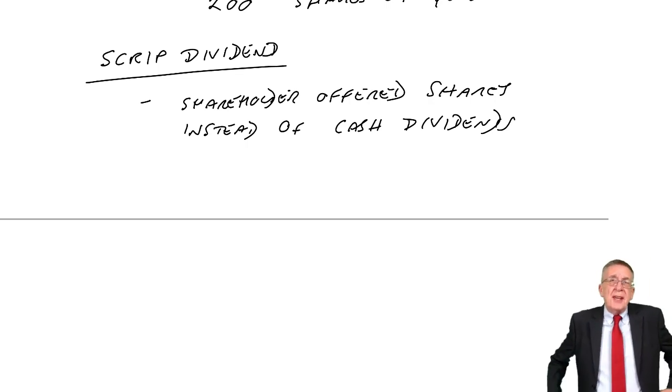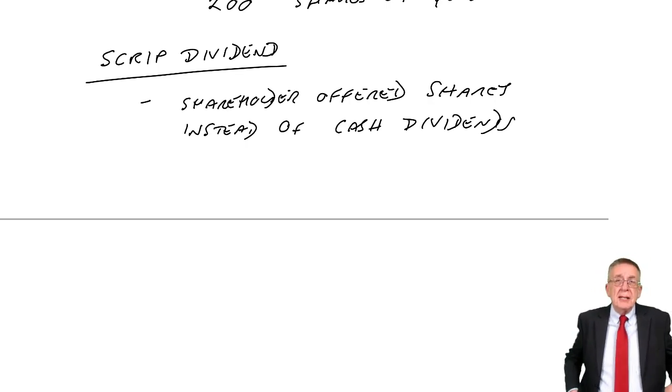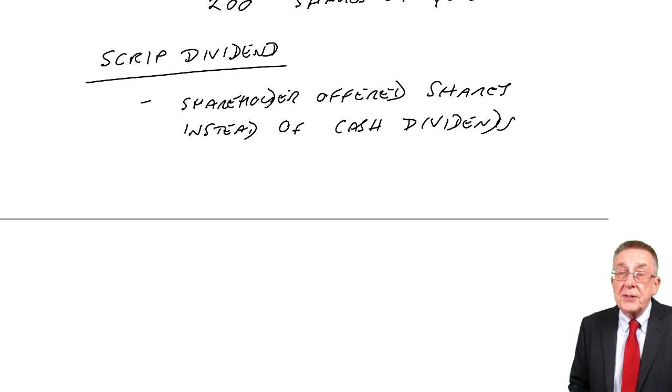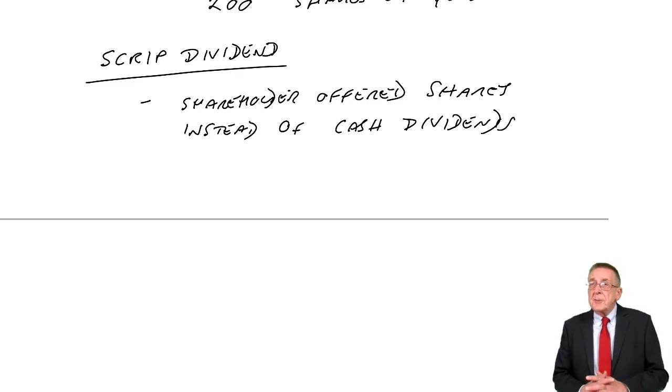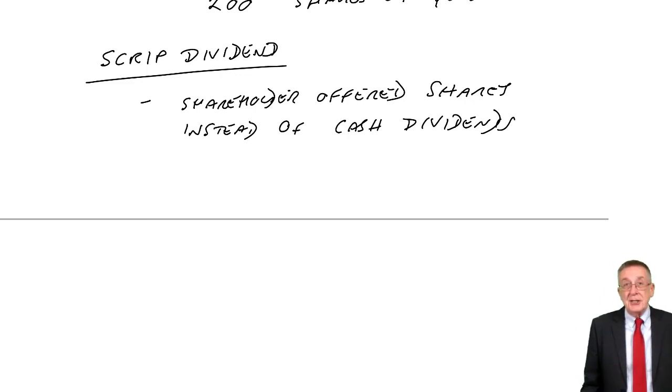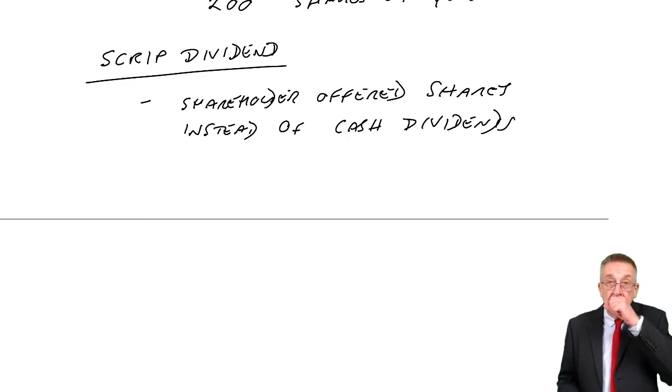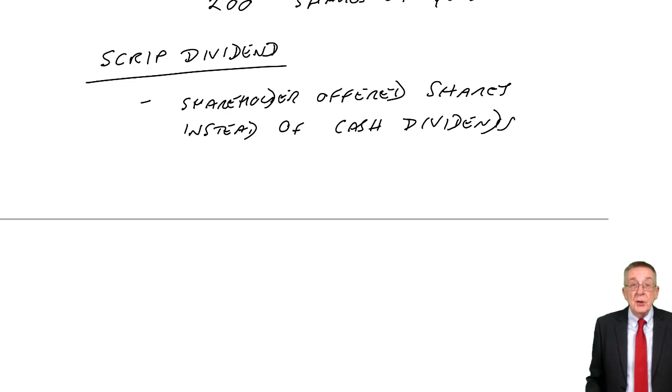But it's very common these days for companies to give you the choice and say, well, you can either have cash or you can have the same value of shares, of new shares in the company. So if your dividend is $1,000, if that's what you're entitled to, you have the choice. Take the $1,000 in cash if you want. Or instead, we'll give you some new shares worth $1,000.